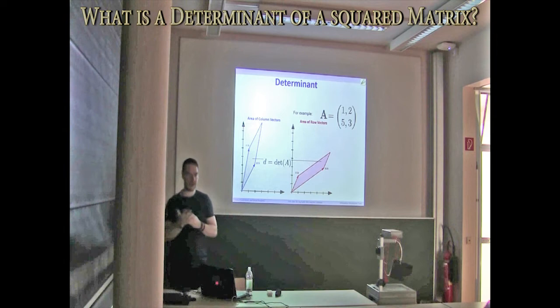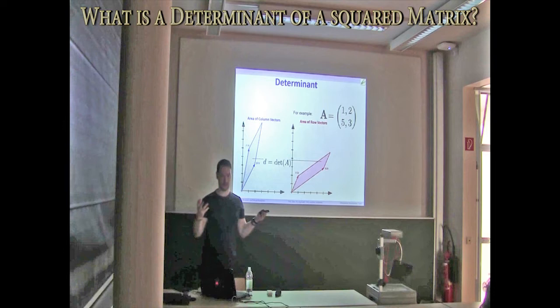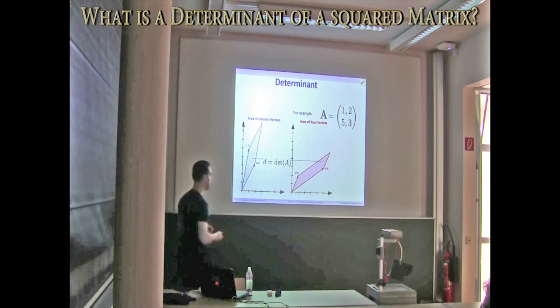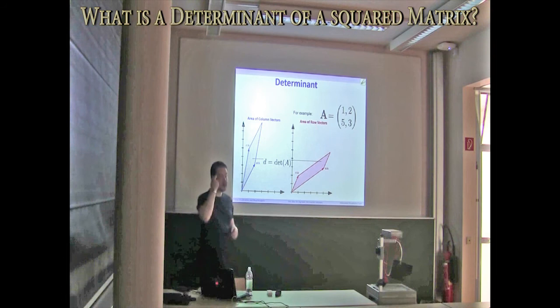Just the area that is spanned by all the rows, or the volume, or the hypervolume and so on, that is spanned by all of the column and row vectors. Okay?